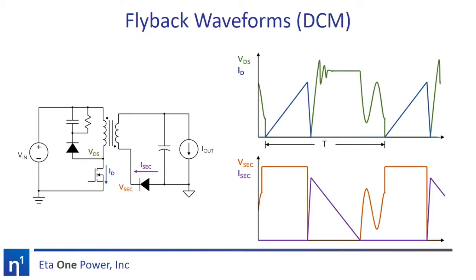Now let's take a look at the operation of the standard fixed-frequency flyback converter. At the beginning of each period, the primary side transistor turns on, charging the transformer's magnetizing inductance. We are using a current mode control converter, so the switch turns off when the primary current reaches the value set by the error amplifier. When the primary side transistor turns off, the drain voltage shoots up and rings and is clamped by the primary side clamp. The magnetizing current is immediately transferred through the transformer to the secondary side, and charges the output through the output diode or synchronous rectifier.